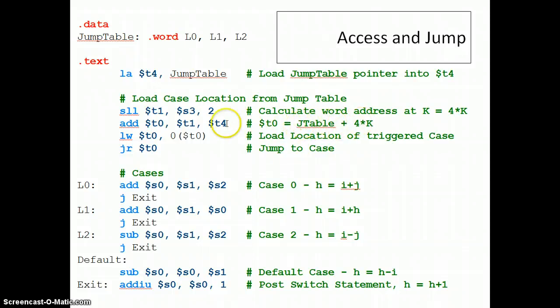And then this next part calculates the actual word address. The actual word address is the base address, which is the jump table start address, plus four times K, which gives me a location somewhere inside of the jump table. So now this is the address to a location in the jump table, and that stores the location of the triggered case. We have to load that location. So we take T0, which is the location of the case that we want to trigger, now case address in T0, and then we use the jump register command to jump to that location.